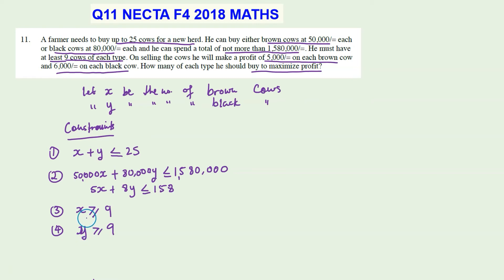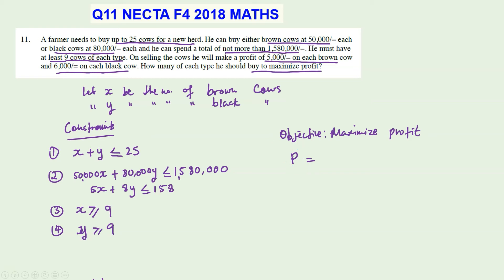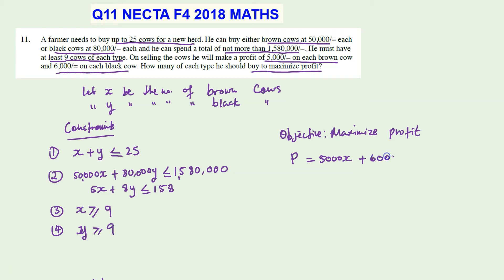Now we need to define our objective. The objective is to maximize profit. The profit function is: profit equals 5,000 times x — the profit per brown cow — plus 6,000 times y — the profit per black cow. So P equals 5,000x plus 6,000y. This is our objective function, which we will work with considering all these constraints.